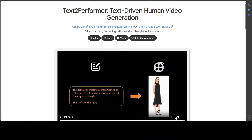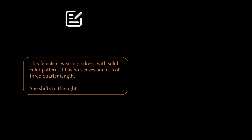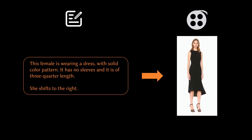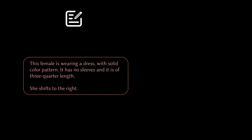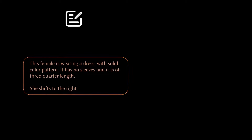Let me play this video so you can see what I'm trying to say. This is a text prompt describing the human — the female is wearing a dress with a solid color pattern, it has no sleeves and is of three-quarter length. She shifts to the right — look at the video now — and then she shifts to the right. How good is that? This is what Text2Performer is doing.